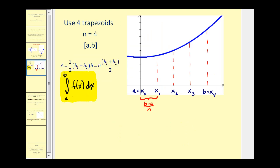Let's say we wanted to approximate this definite integral in yellow by using four trapezoids on the interval from a to b. If we have four trapezoids, n is going to equal four. What we would do is divide this interval into four equal parts by taking the length of the entire interval, b minus a, and dividing it by n. When we divide the interval into four equal parts, this would be a, which we'll call x sub zero, then x sub one, x sub two, x sub three, and x sub four, which is also equal to b. We have four equal intervals. Next, we construct our four trapezoids.